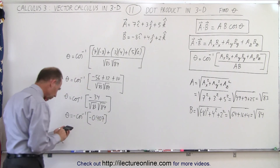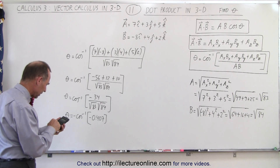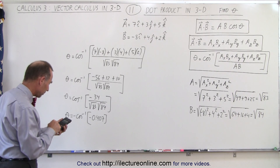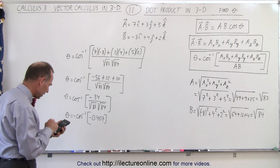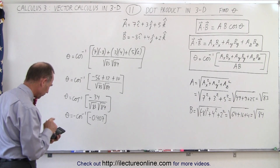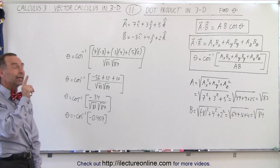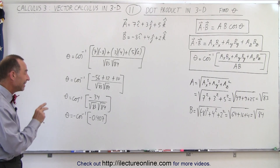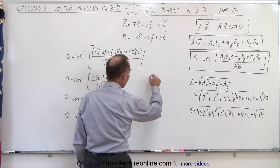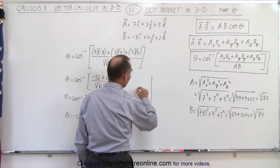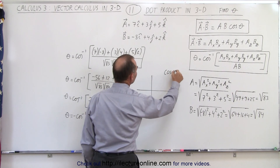Let's quickly review that: 34 divided by 83 — take the square root, divided by 84 — take the square root, and we get negative 0.407. Think about the angle: since the value is negative 0.407, we look at the quadrants for cosine.